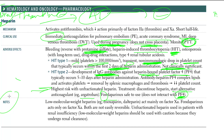Low molecular weight heparin — such as enoxaparin and dalteparin — acts mainly on factor 10a. Fondaparinux acts only on factor 10a. Note the wording: low molecular weight heparin acts mainly on factor 10, while fondaparinux acts only on factor 10 — it is only fond of factor 10.